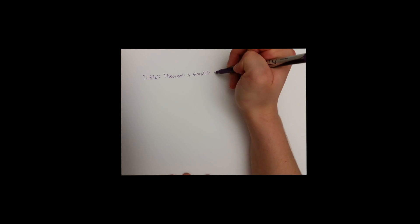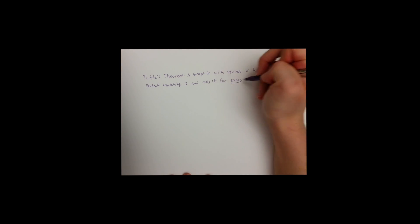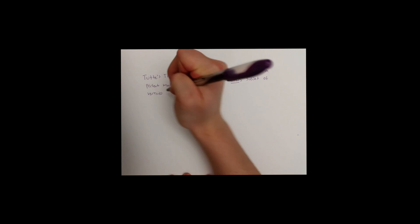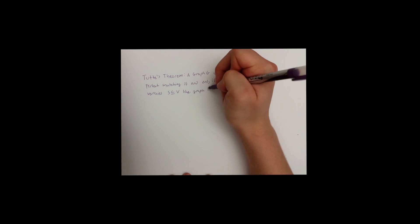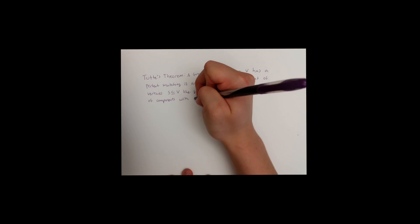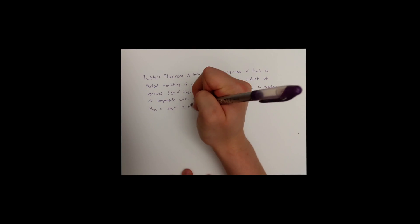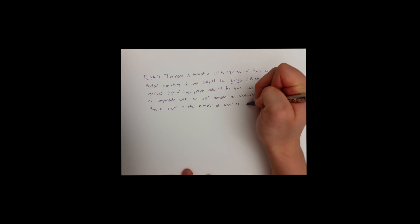With these concepts under our belts, we can understand Tutt's theorem. Tutt's theorem states that a graph G with vertex V has a perfect matching if and only if, for every subset of vertices S, which is a part of or all of V, the graph induced by V minus S has a number of components with an odd number of vertices less than or equal to the number of vertices in S.